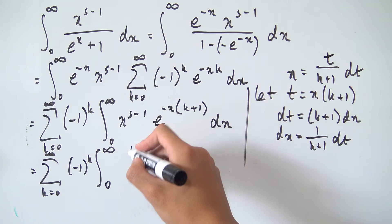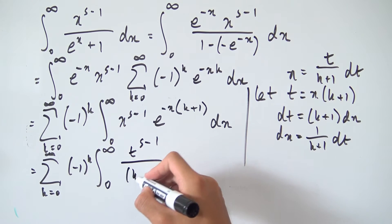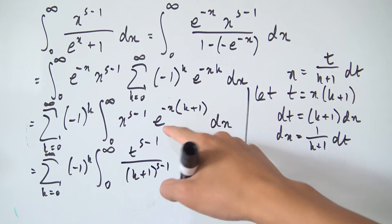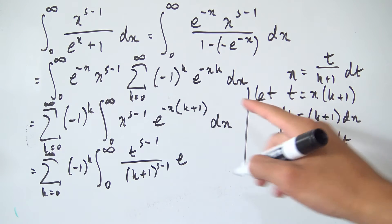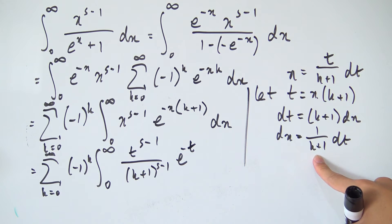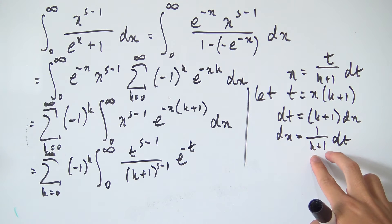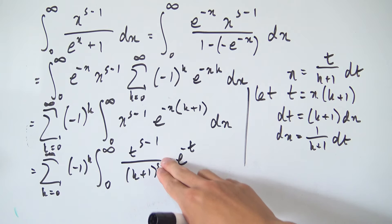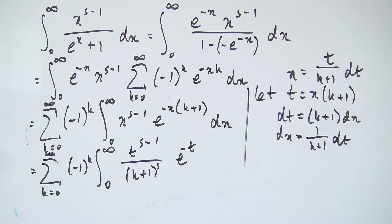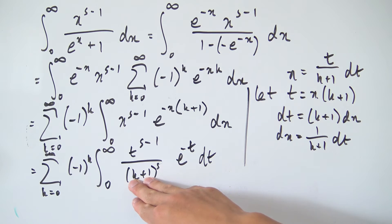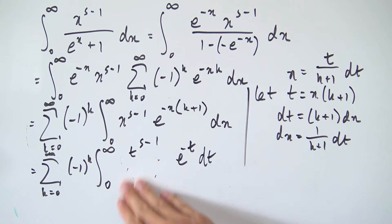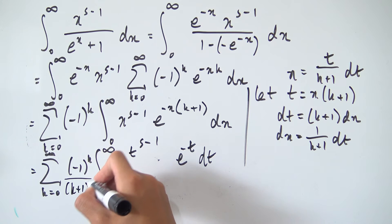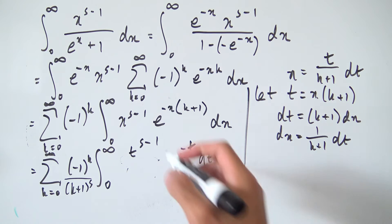Substituting back, x to the s minus 1 becomes t to the s minus 1 over k plus 1 to the s minus 1, and the exponential becomes e to the minus t. The dx term contributes 1 over k plus 1, so combining with the existing k plus 1 in the denominator, we add one to the exponent and get k plus 1 to the s in the denominator. So we have the sum from k equals 0 to infinity of negative 1 to the k times the integral of t to the s minus 1 times e to the minus t dt, all over k plus 1 to the s.